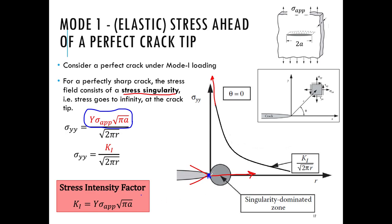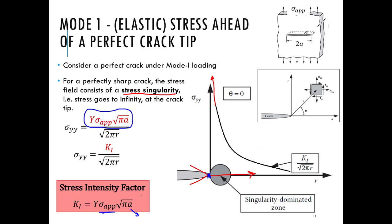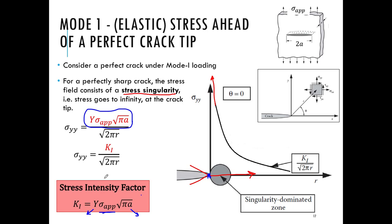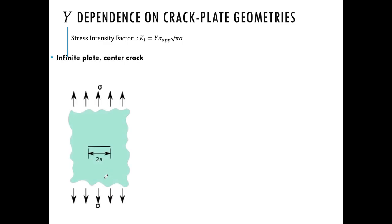The stress intensity factor K₁ is a function of the applied loading σ_applied, the crack length a (where the total crack length is 2a), and a geometric parameter Y which takes into account the geometry of the component or specimen. A larger crack length a leads to a higher stress intensity factor.